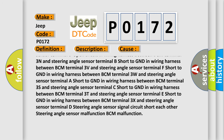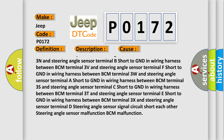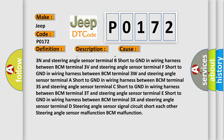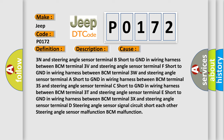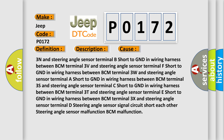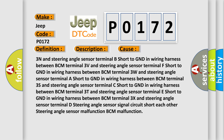Short to GND in wiring harness between BCM terminal 3T and steering angle sensor terminal E. Short to GND between BCM terminal 3X and steering angle sensor terminal D. Additional causes include: steering angle sensor signal circuits shorting to each other, steering angle sensor malfunction, or BCM malfunction.